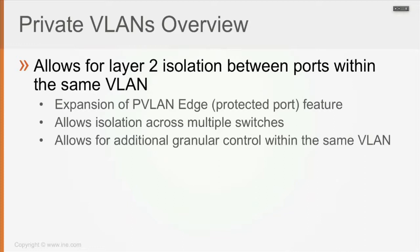So Private VLANs are an expansion of the Private VLAN Edge feature. First of all, it's going to allow isolation or restriction between hosts within the same VLAN across multiple switches, while Private VLAN Edge works only for ports connected on the same switch. Not only does the configuration span across switches, but it also allows for more granular control of what happens within that VLAN.